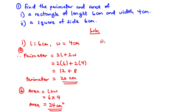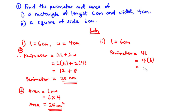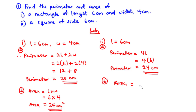For part (ii), a square of side 6 centimeters — the side 6 cm is the same as the length being 6 cm. The perimeter of a square is 4L, so 4 times 6 equals 24 centimeters. For the area, L squared equals 6 squared equals 36. So the area is 36 centimeters squared.